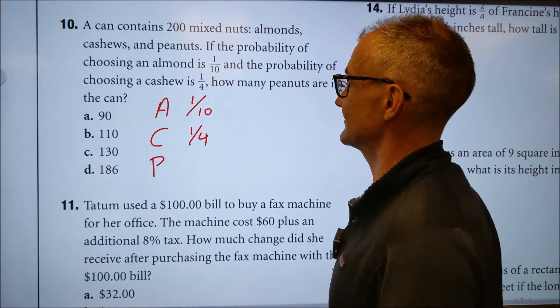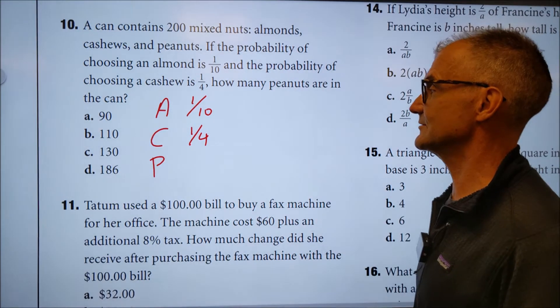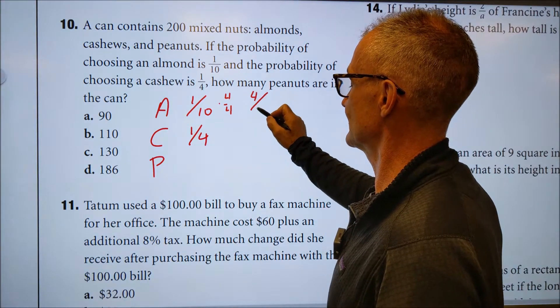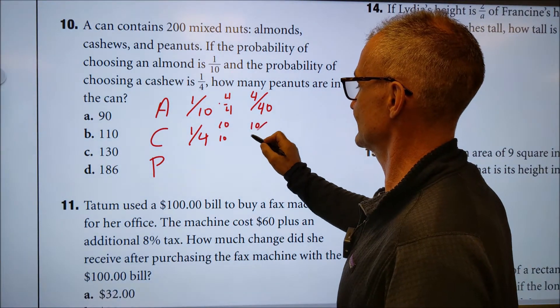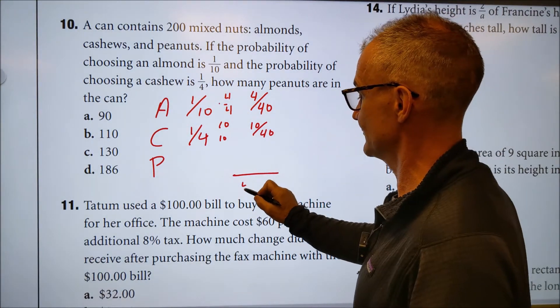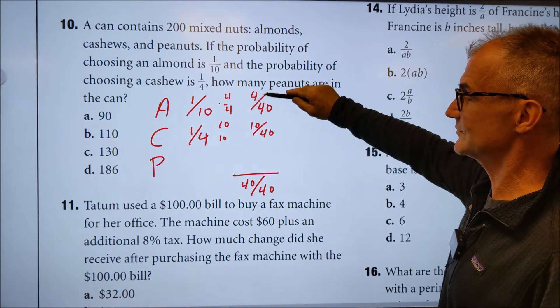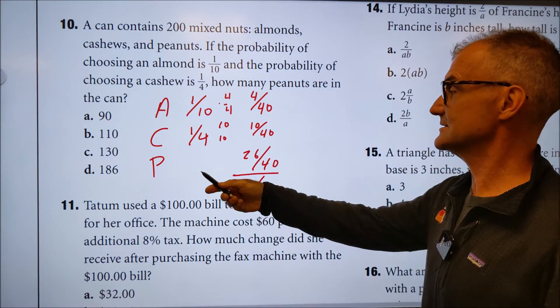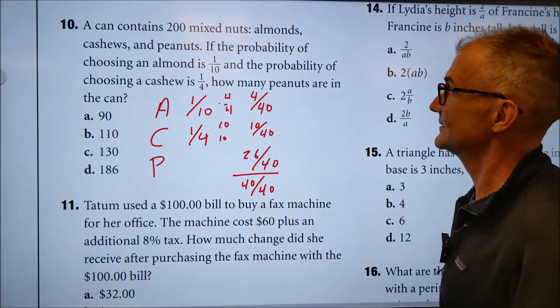So we've got to figure out that fraction. So with this fraction right here, we're going to have to have a common denominator. The only numbers that four and 10 go into are 40. So I'm going to multiply this by four over four. That'll give me four forties. I'm going to multiply this by 10 over 10 to give me 10 forties. And then all three of these things added together has to be 40 forties, the full amount. So I'm going to take 40 forties minus 14 forties, and that'll give me 26 forties. So the number of peanuts is 26 forties of the total. And there are 200 total nuts in there.